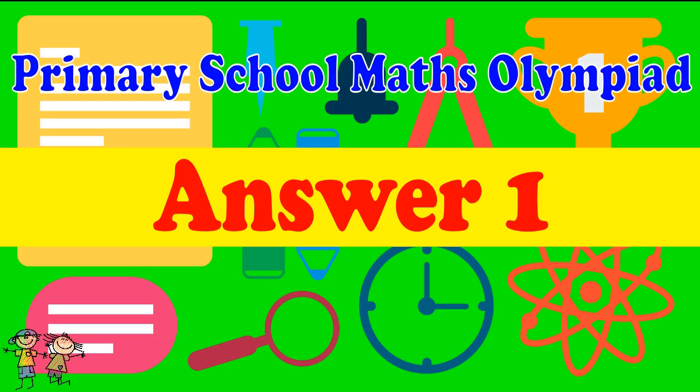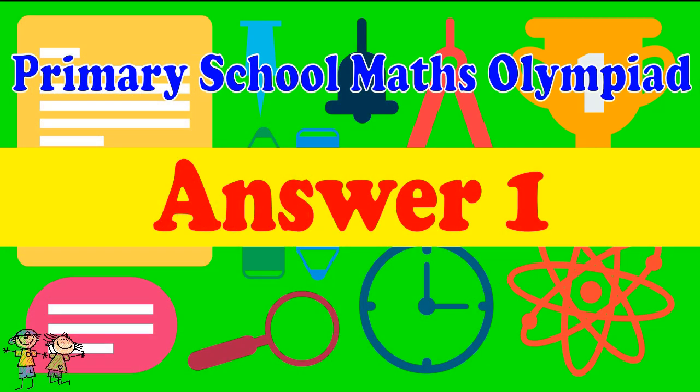Answer for question 1: Add the three dotted lines to form a square. Angle ADC equals 45 degrees.